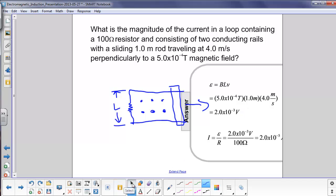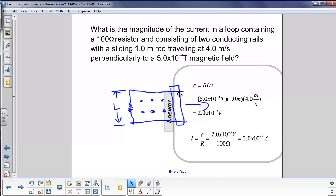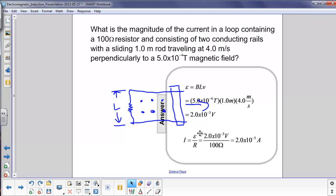But we're not done yet. We weren't asked for the EMF. We were asked for the current. So now we go to Ohm's Law, which is I equals V over R or EMF over R. Carry out the substitution here. We put the 2.0 times 10 to the minus 3 volts here. We have a 100 ohm resistor. And the answer is 2.0 times 10 to the minus 5th amps.